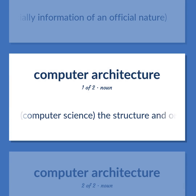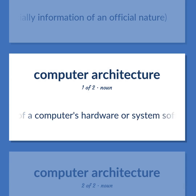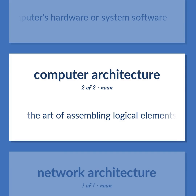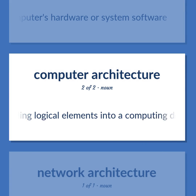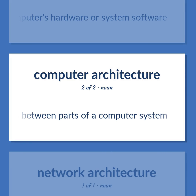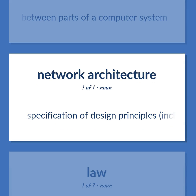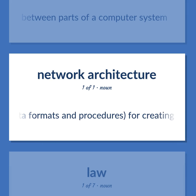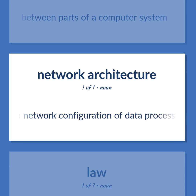Computer science: the structure and organization of a computer's hardware or system software. The art of assembling logical elements into a computing device; the specification of the relation between parts of a computer system. Specification of design principles, including data formats and procedures, for creating a network configuration of data processors.